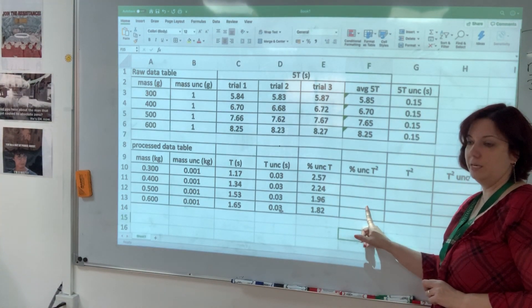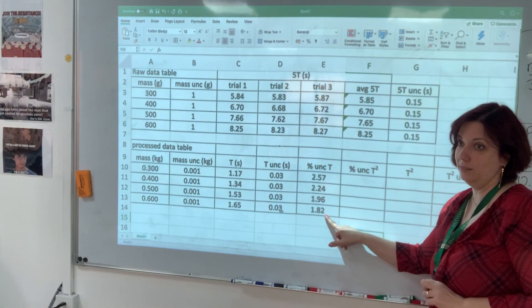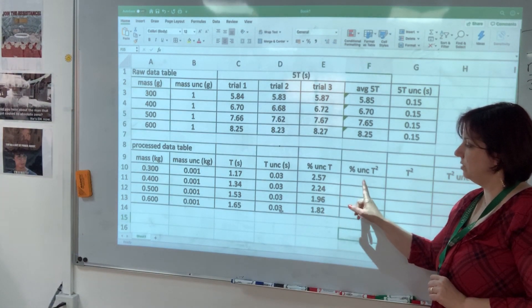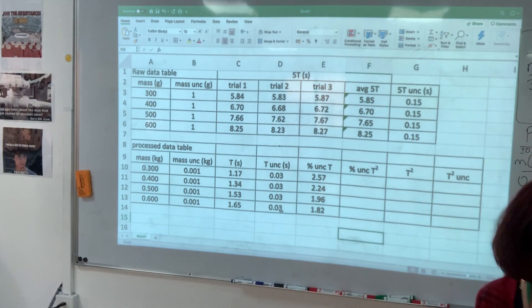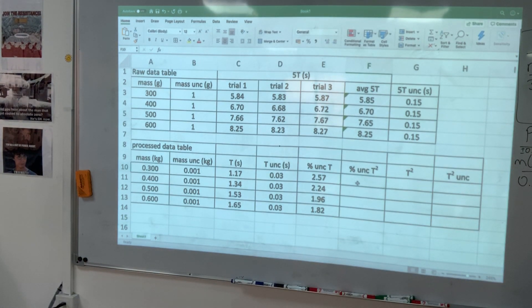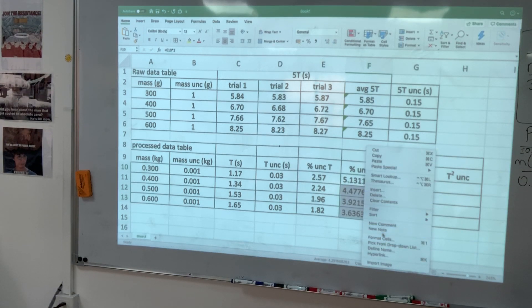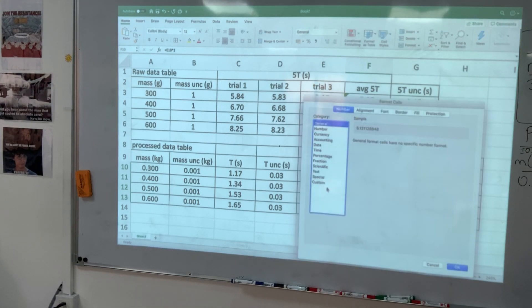Now here I want twice that because I'm multiplying, so I'm going to be adding the percentage uncertainty. So I'm going to tell Excel to multiply this number by two and write it here. How am I going to do that? Go to the cell, tell Excel I'm writing a formula by typing an equation mark, select, multiply by two, enter, and then copy and make everything have two decimal places and there we have it.